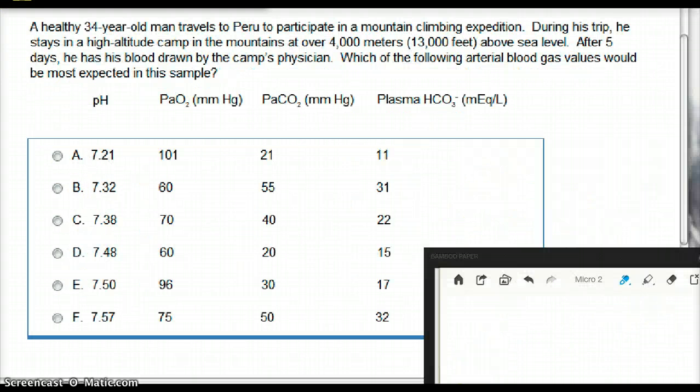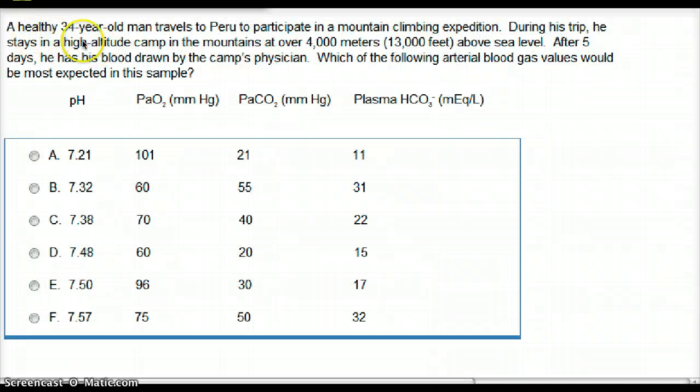So, in this situation, D is going to be the correct answer. So, let's do another question. So, in this question, a healthy 34-year-old man travels to Peru to participate in a mountain climbing expedition. During his trip, he stays in a high-altitude camp in mountains at over 4,000 meters above sea level. After 5 days, he has his blood drawn by the camp's physician. Which of the following arterial blood gas values would be most expected in this sample?